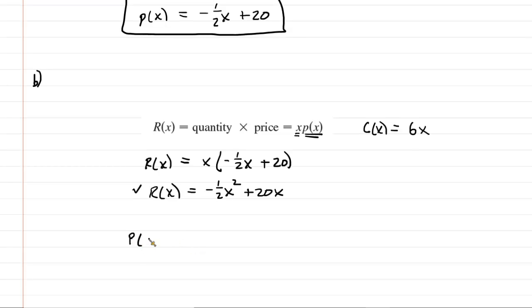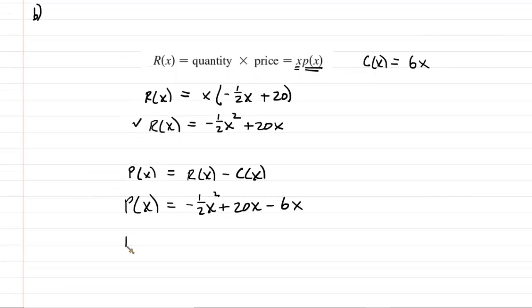We next note again that the profit function, which is what we're trying to maximize, is equal to the revenue minus the cost. So we will simply plug in the two functions for revenue and cost that we have obtained. Here again is the revenue function. And then subtract the cost function to 6x. We can certainly simplify this to a nice profit function equal to negative 1 half x squared plus 14x.